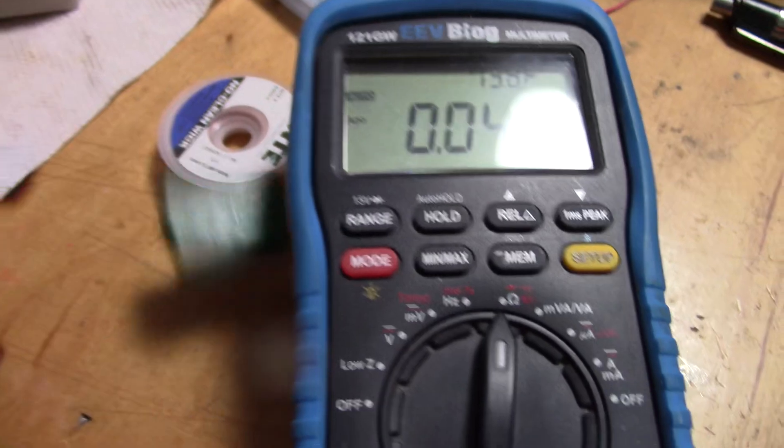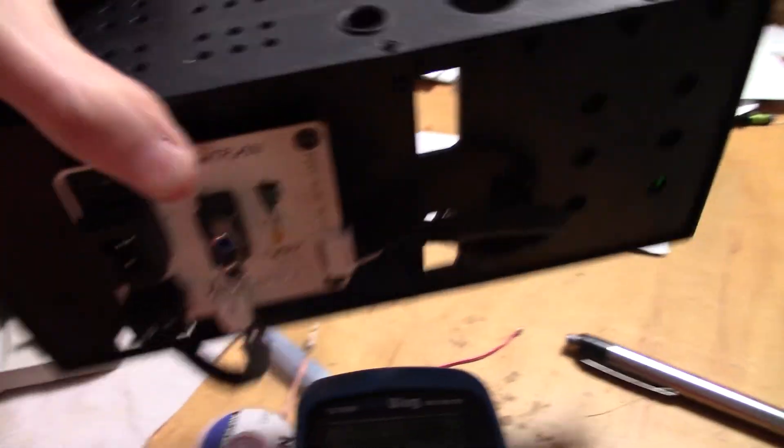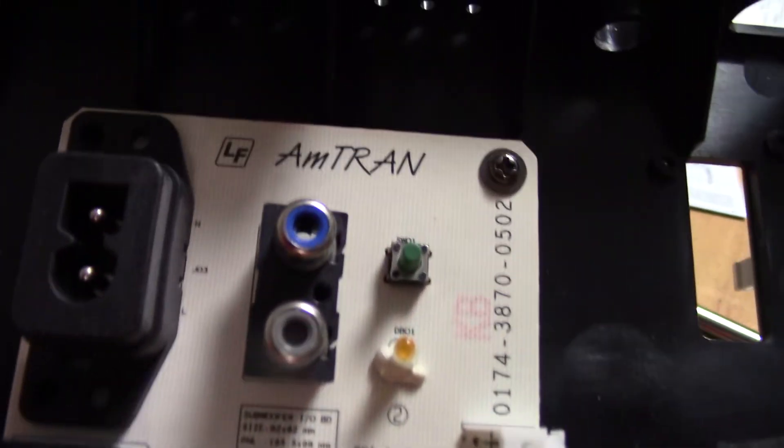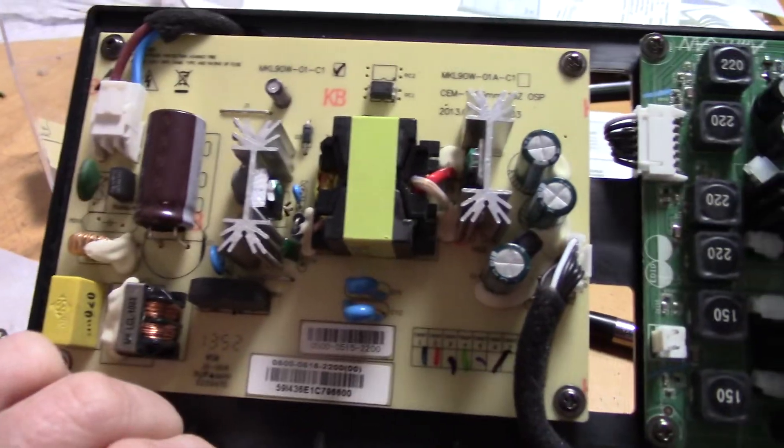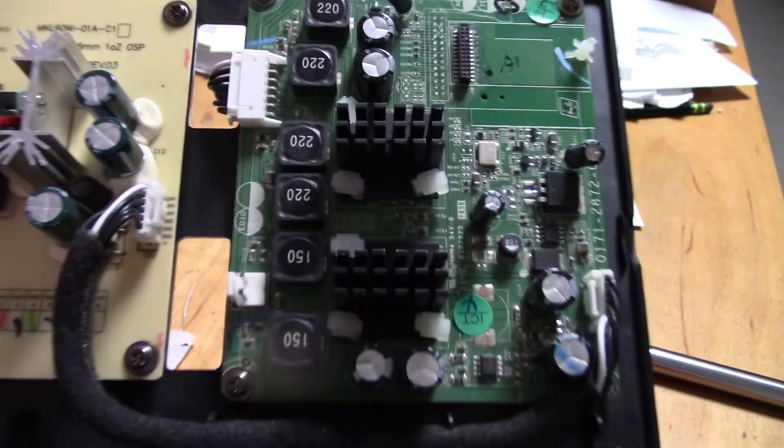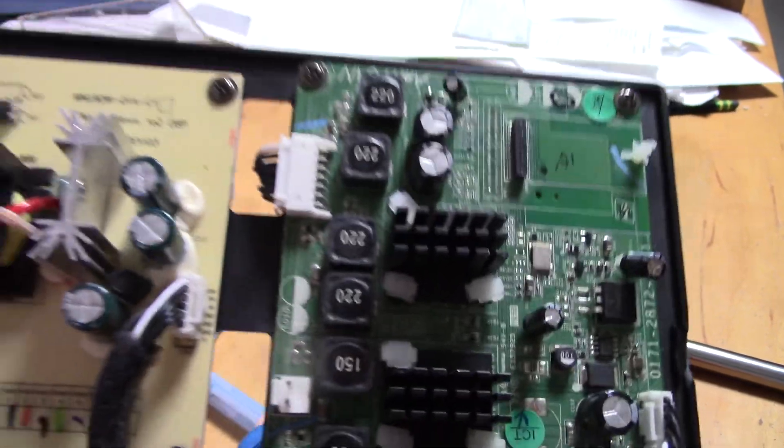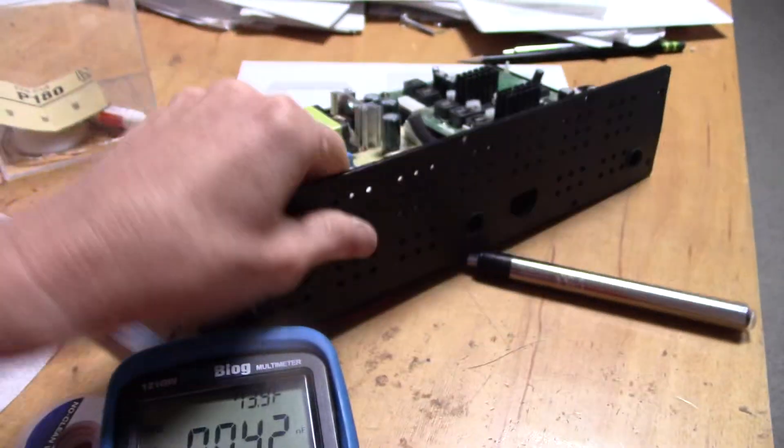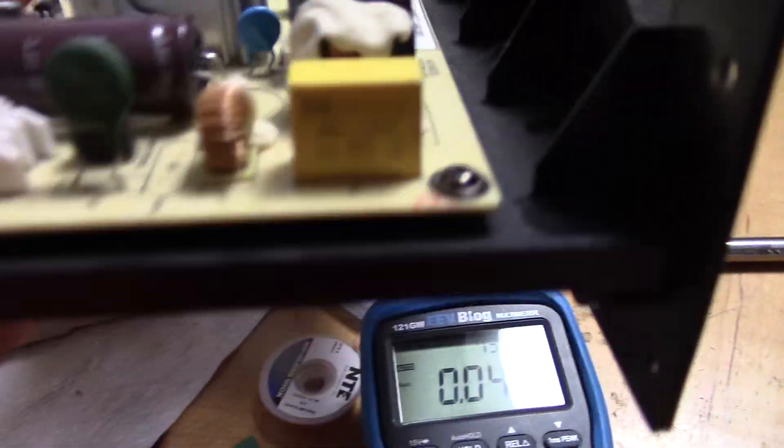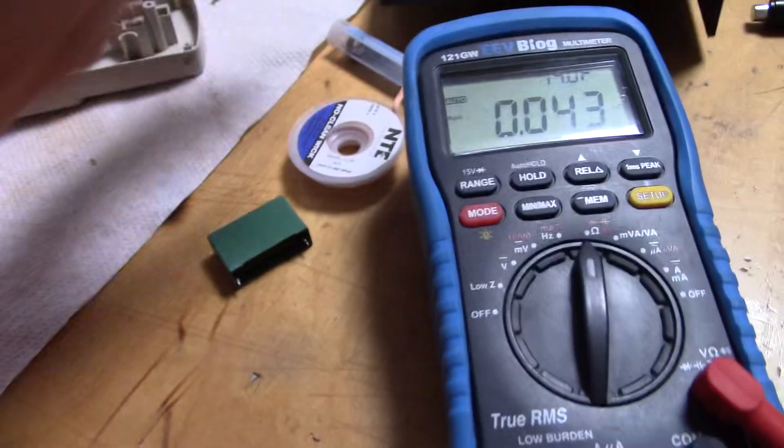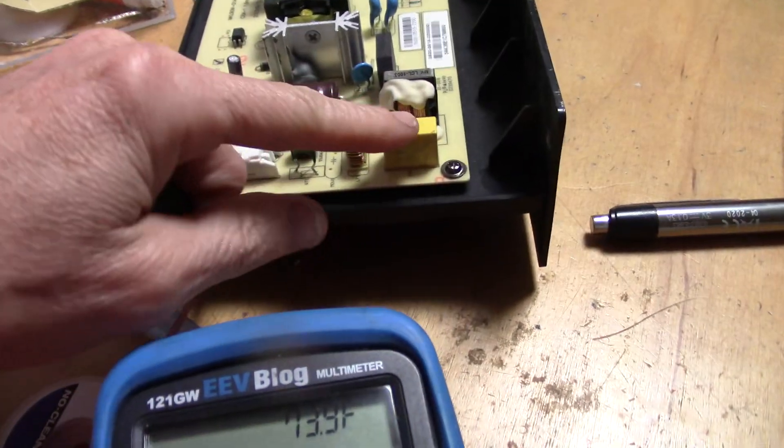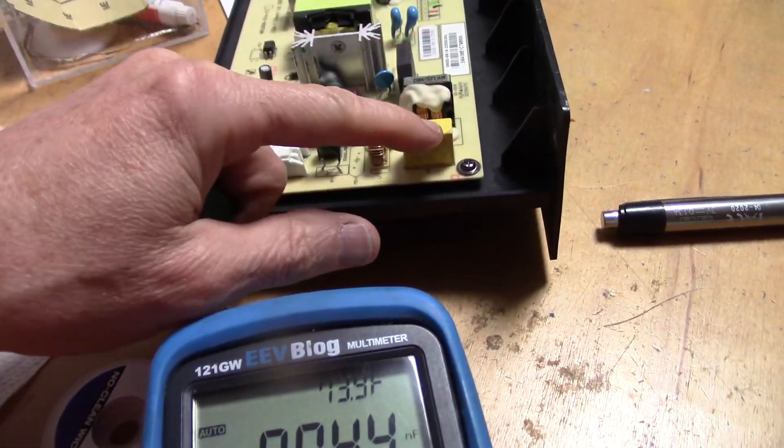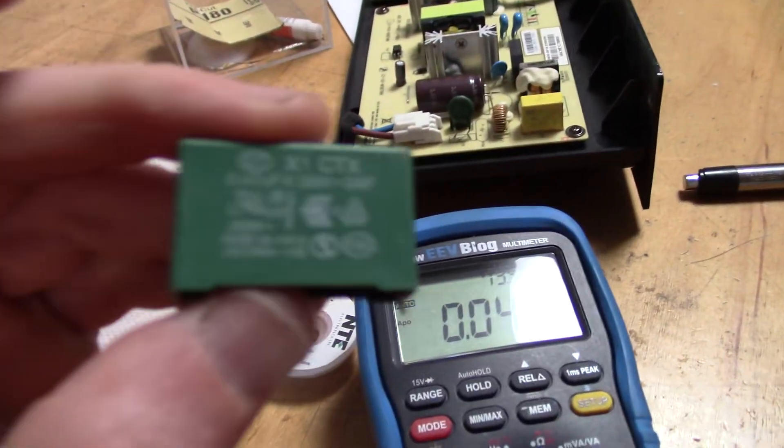Yep, measures bad. Well, somebody sent me this subwoofer thing. It has a 24-volt supply and some class D amplifier board on it, and it has this little cap. It seems to be rated what we need.